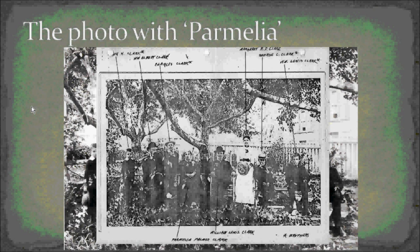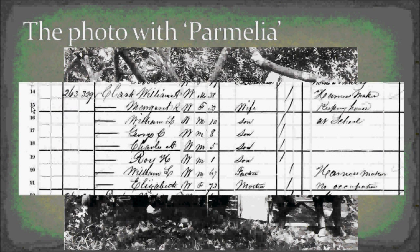To get a little bit closer, I pulled the 1880 census for the family. We've got the husband William Clark, his wife Margaret, four boys — William, George, Charles, and Roy — and his father William and William's wife Elizabeth. Already I've got a discrepancy: my father-in-law labeled the oldest woman in the middle as Parmelia, but according to the 1880 census, that can't be Parmelia — it's got to be Elizabeth.